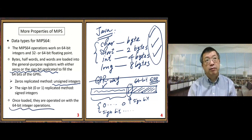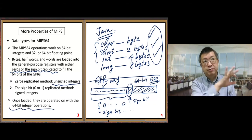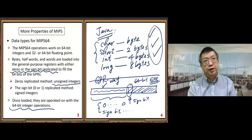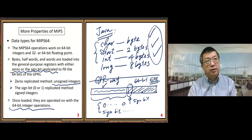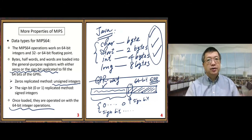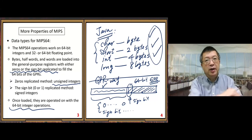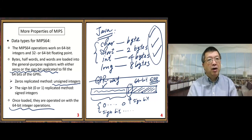You already do the conversion when you load the data, converting any of these cases to the 64-bit version, and then you just do 64-bit integer operations on those values. That completes Part C of this module.